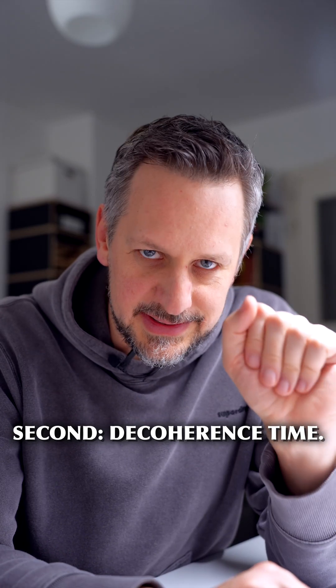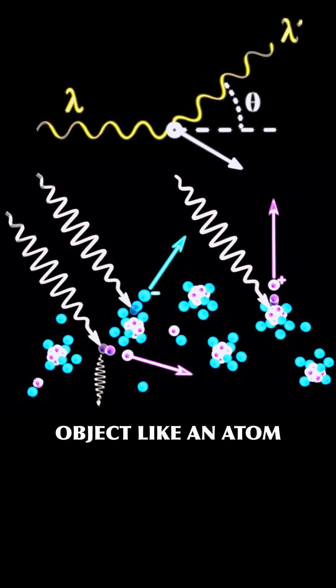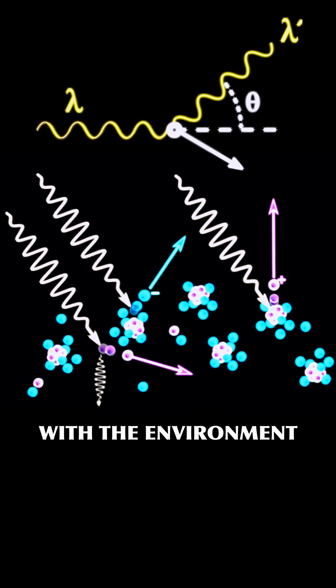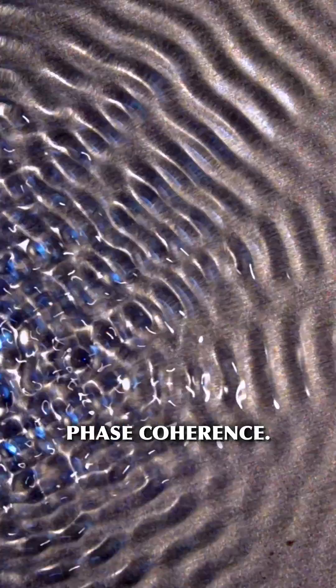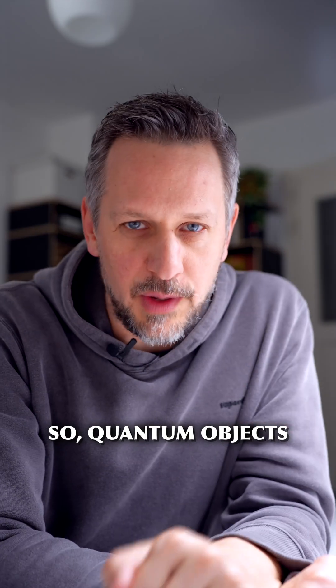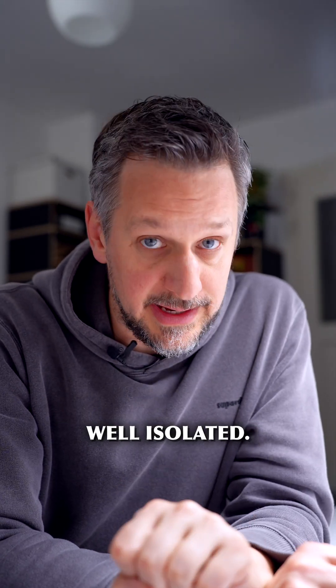Second, decoherence time. Whenever a quantum object, like an atom, in some way interacts with the environment, for example by scattering a photon, it loses its phase coherence. This means it can no longer show quantum effects like interference. So, quantum objects also need to be well isolated.